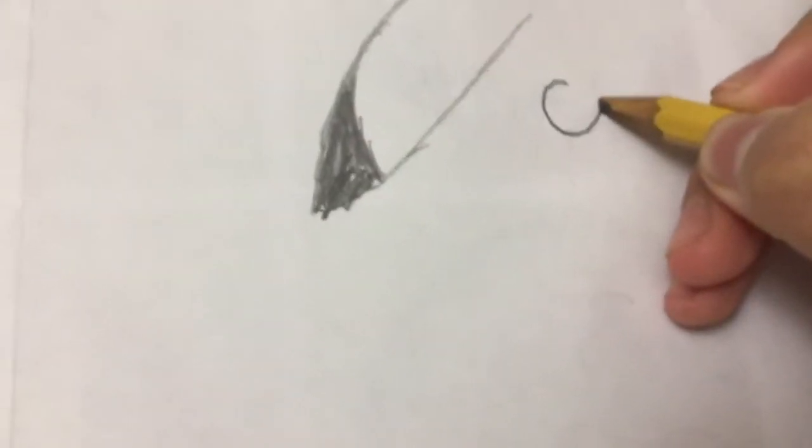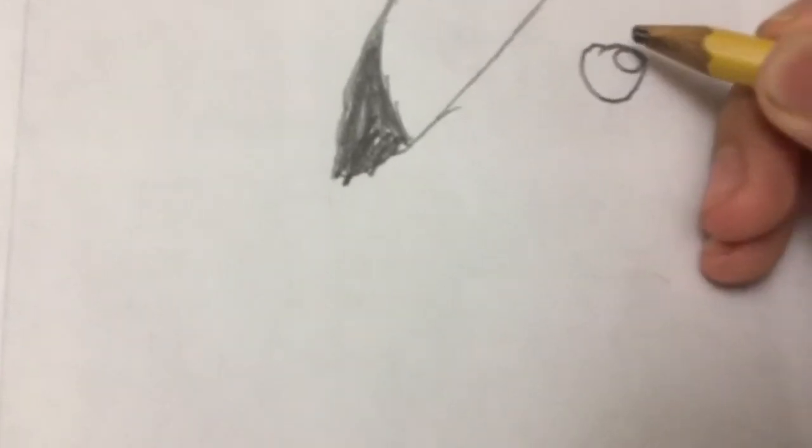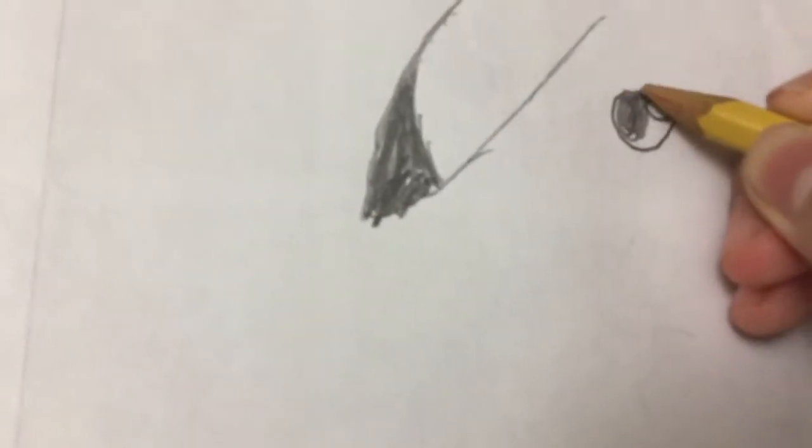I'm going to first draw his eyes. His eye is like a circle, then another circle for his iris, and then color it in. There you go.